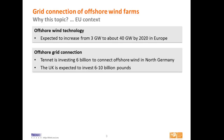Now let's talk about money for the grid connection — the investment needed to connect these offshore wind farms to the existing grid. Tenet, the Dutch TSO, now also active in northern Germany, is already investing 6 billion euros to connect offshore wind farms there. The UK is expected to invest between 6 and 10 billion pounds. To give you an idea of the order of magnitude, Ofgem has stated that the current onshore transmission asset base in the UK is around 7 billion — so the UK is expected to put roughly the same investment into the sea as it currently has onshore. So it's massive.